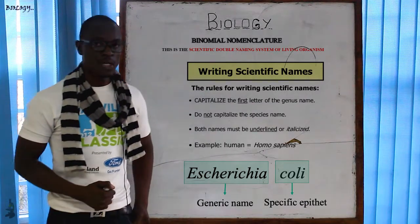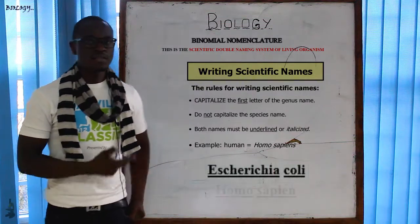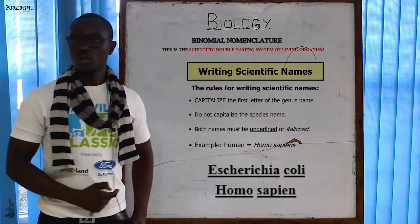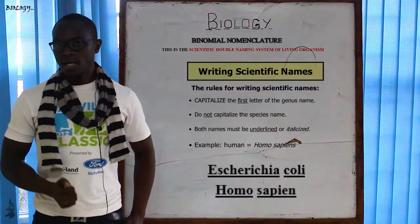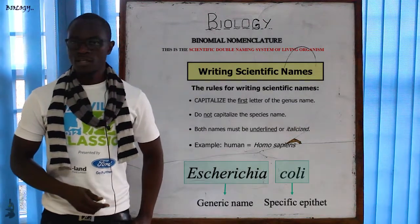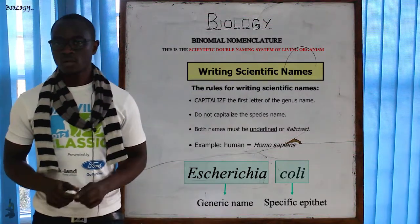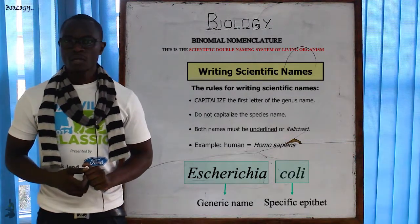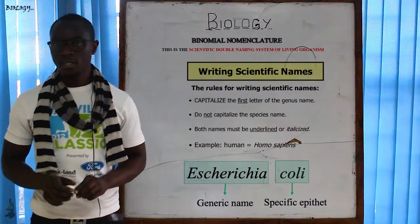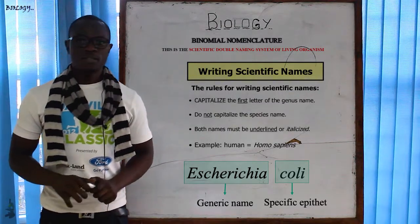The other rule is that when writing these names, they should be underlined separately — you should not give them one stroke of line; they should be underlined separately. Also, when these names are typed in a textbook or any document, they should be written in italics.